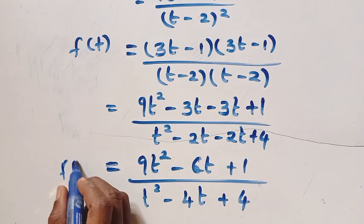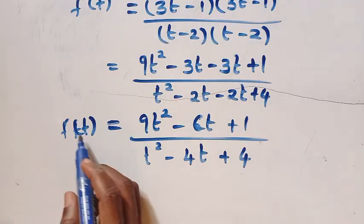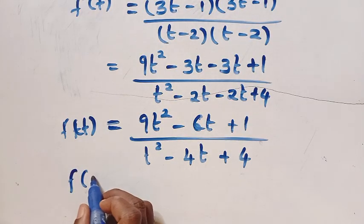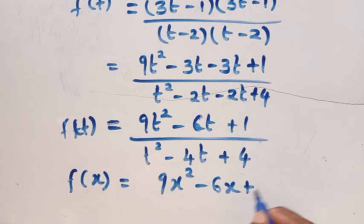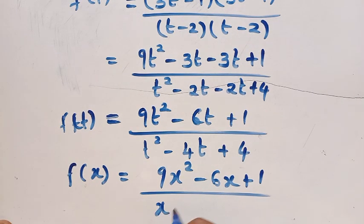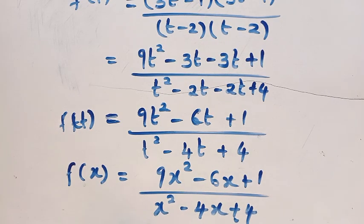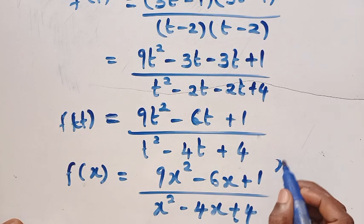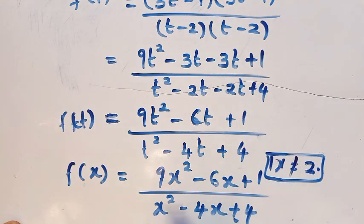All of these are the result for f of t. Now we need to get f of x, so let's replace every single t with x. We get f of x equals (9x squared minus 6x plus 1) divided by (x squared minus 4x plus 4). Note that when x equals 2 this equation is not valid, so x must not equal 2. Aside from that, we will have a valid function.